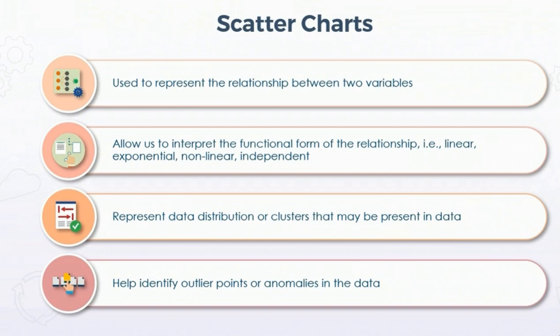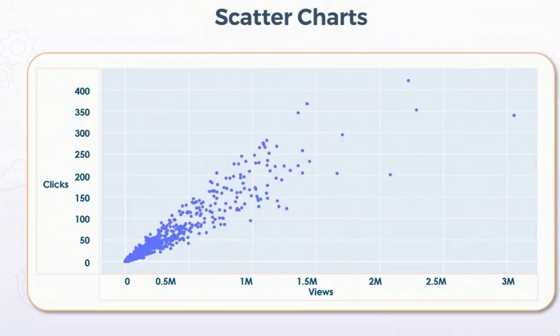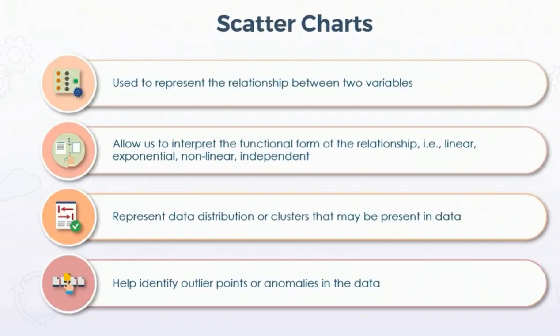Scatter plots are also helpful in identifying outliers, points, or anomalies in the data. We can see a trend in the chart, and there are a few points which we may consider outliers. We can check by pattern whether a point is an outlier or an error in the data.